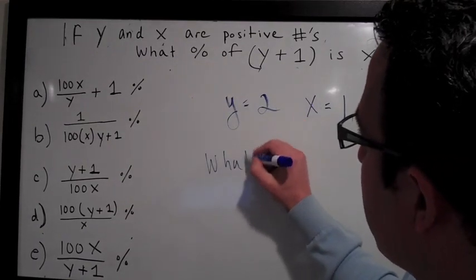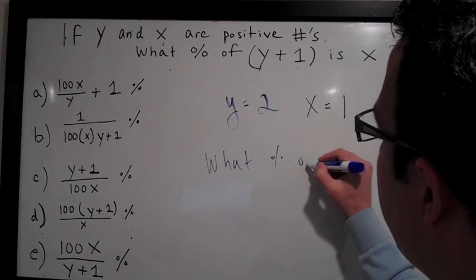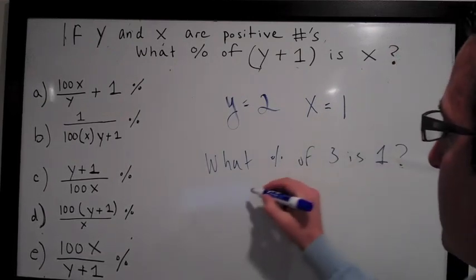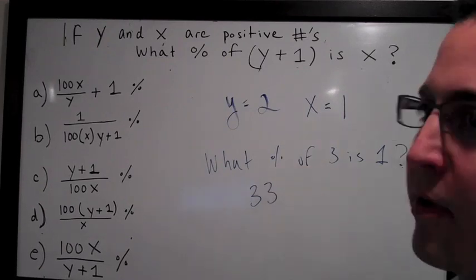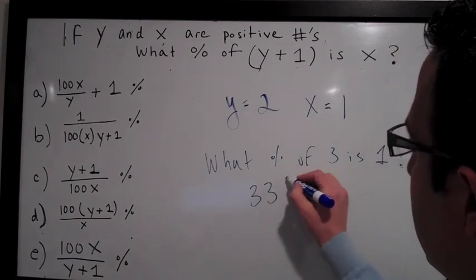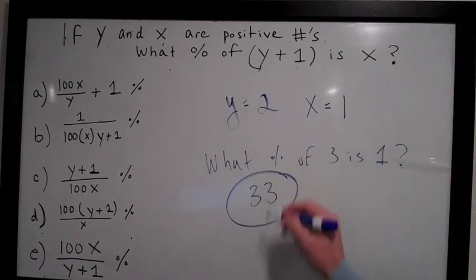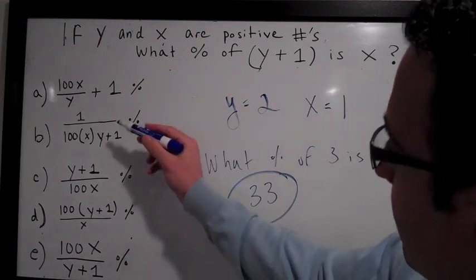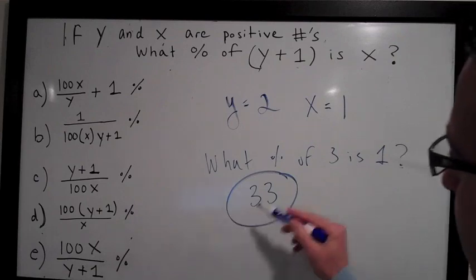The question now is: what percent of 3 is 1? Pretty easy, right? That's 33.33 percent. We'll just say 33. That's what I circle here as our target answer, which means the correct formula will give 33.